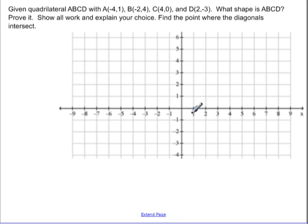To start, I'm going to go ahead and plot the points. I see A is at negative 4, 1, so I'm going to put that there. B is at negative 2, 4, so that's up here. C is at 4, 0 over here. And D is at 2, negative 3, which is down here.